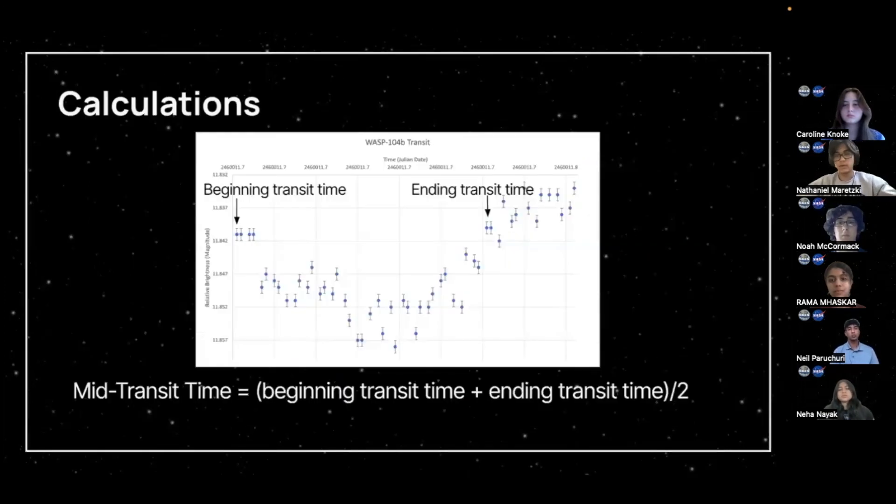Yeah, so diving into our actual data, our actual calculation was the mid-transit time, which we did by estimating where we can kind of tell us the beginning and the ending point of the transit time, and then using that formula of beginning plus ending over two, we can find the midpoint, which should hopefully line up with the deepest part of the transit. So, now we're going to show you some of our calculations and our light curves.